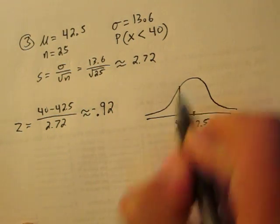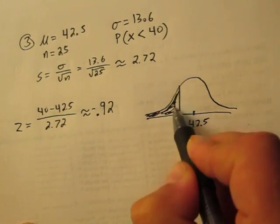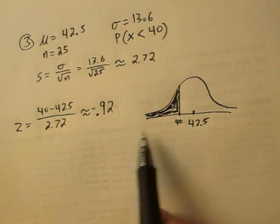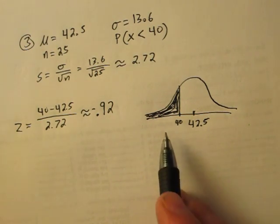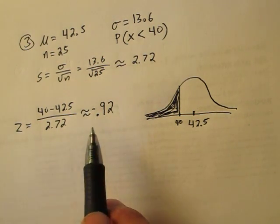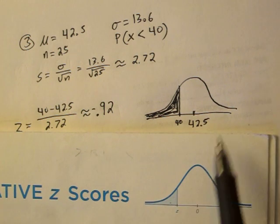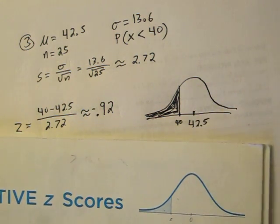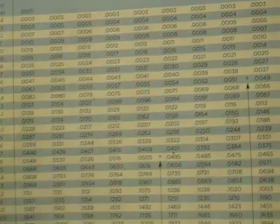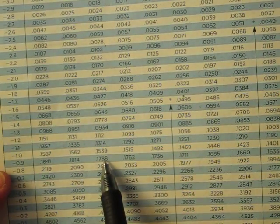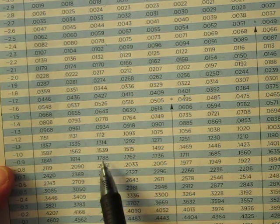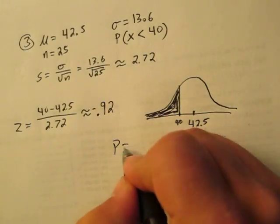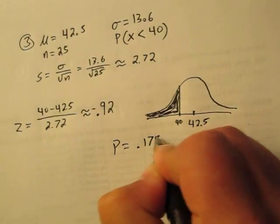So 40 is less than, or we're finding the probability of less than 40. Look up a negative 0.92. And actually this is the first problem where these actually match, so we're not going to have to subtract by 1 or anything like that. Negative 0.92 is right here. So the probability is 0.1788.